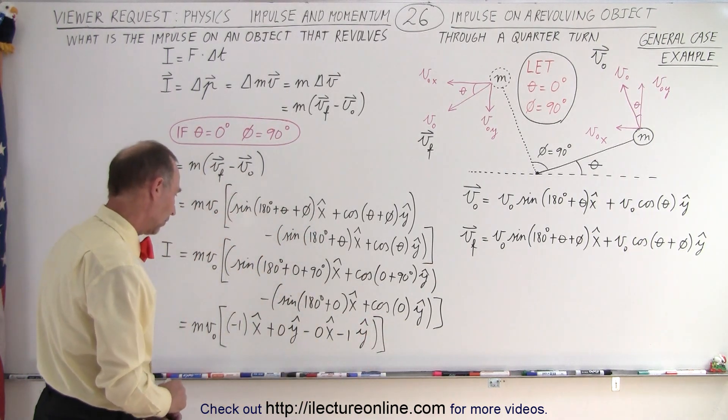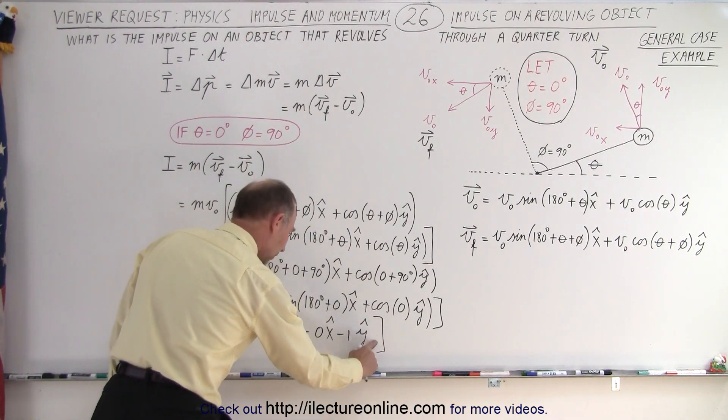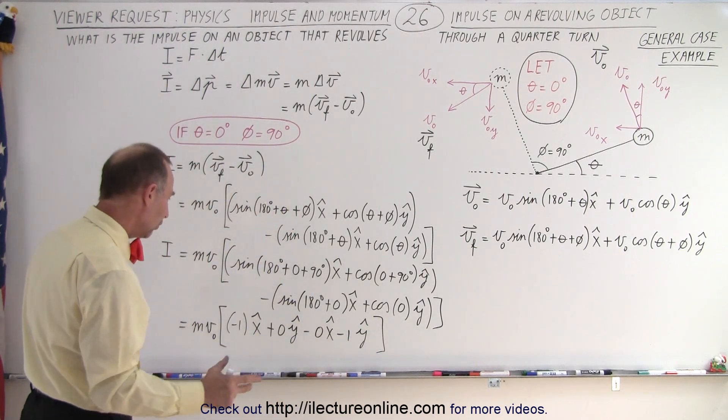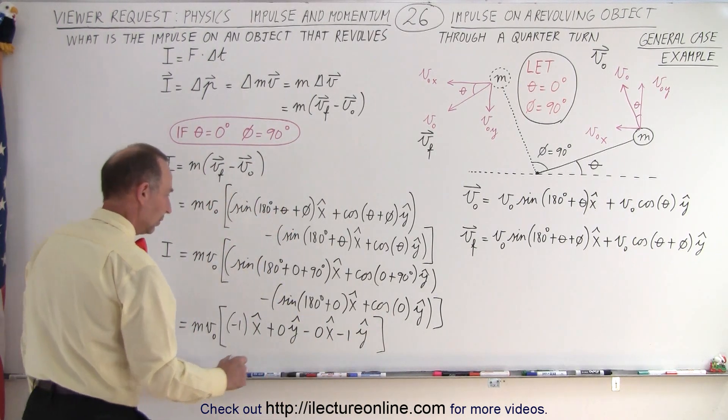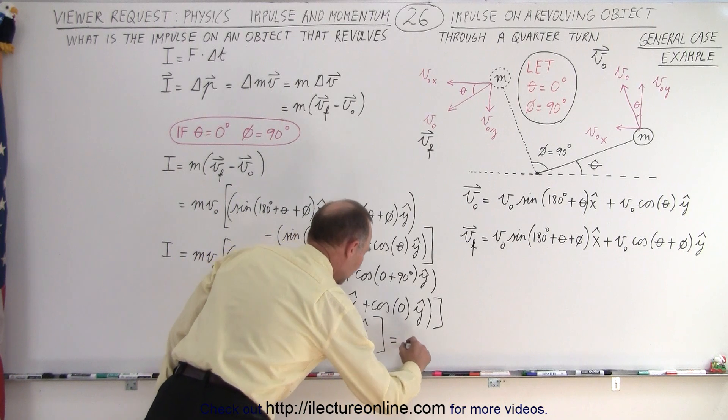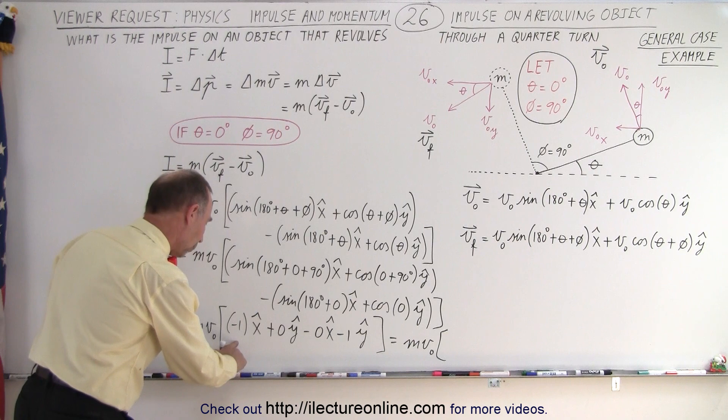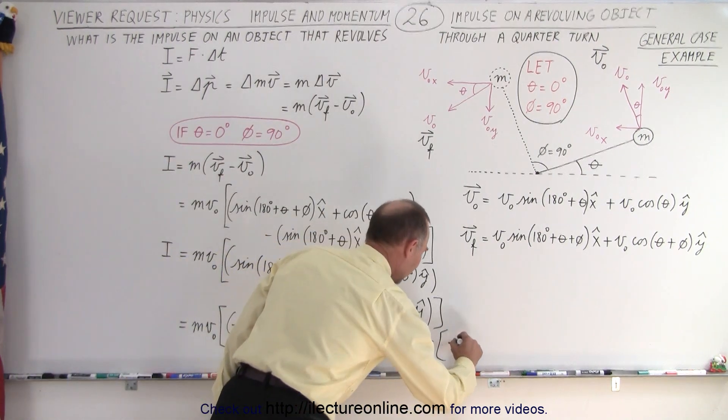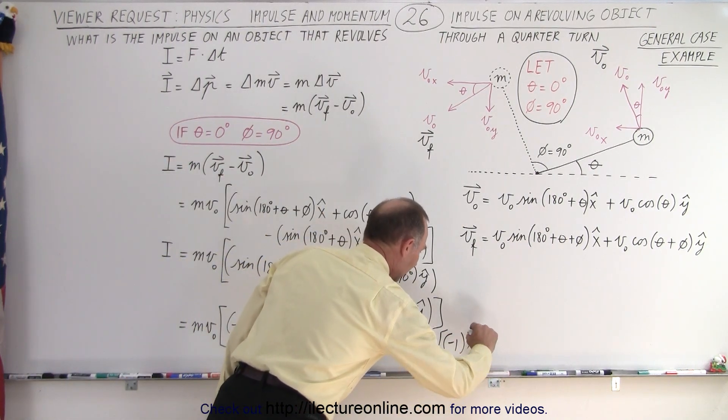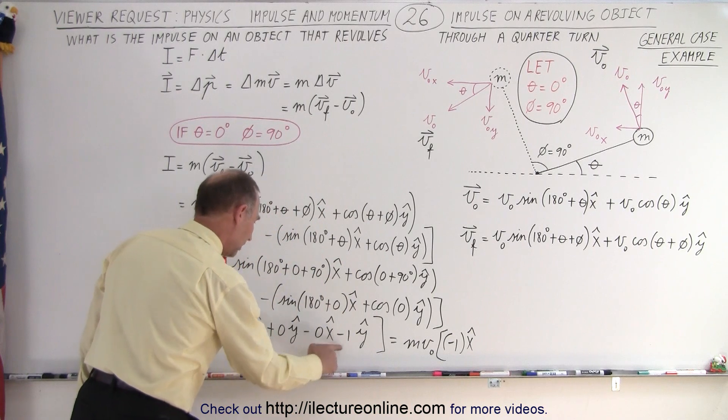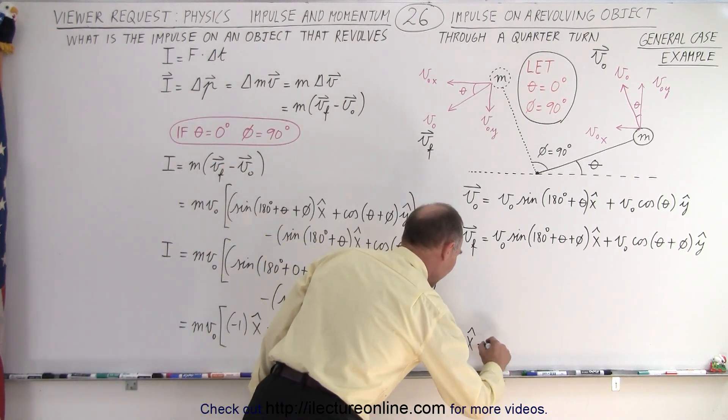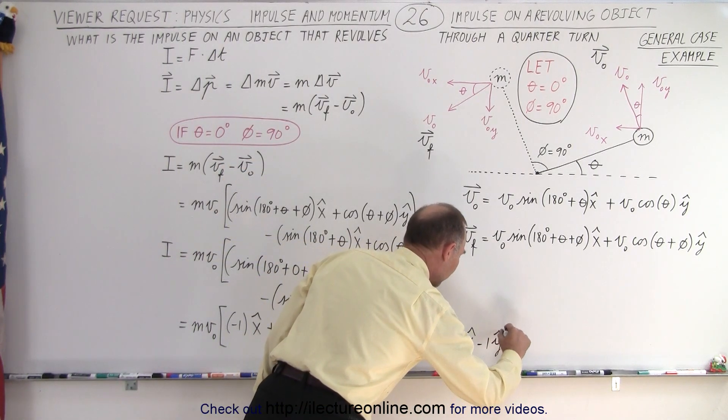Like this. I don't know if I need the parentheses anymore. I can probably just get rid of it. Notice now when we combine the two, that would be equal to m times v sub naught times negative 1 in the x direction and negative 1 minus 1 in the y direction.